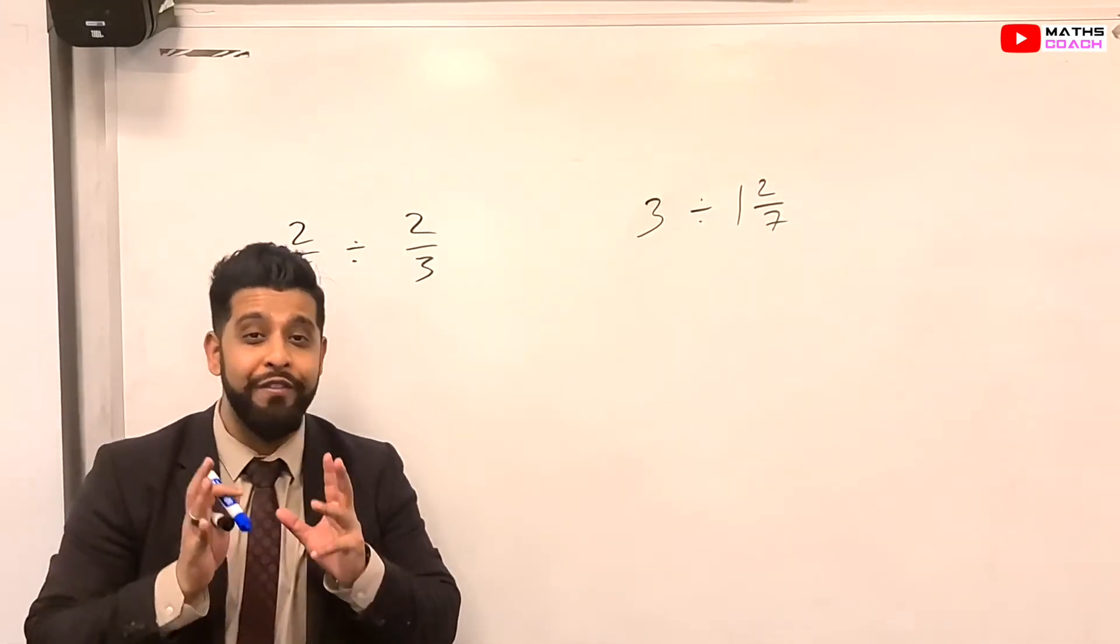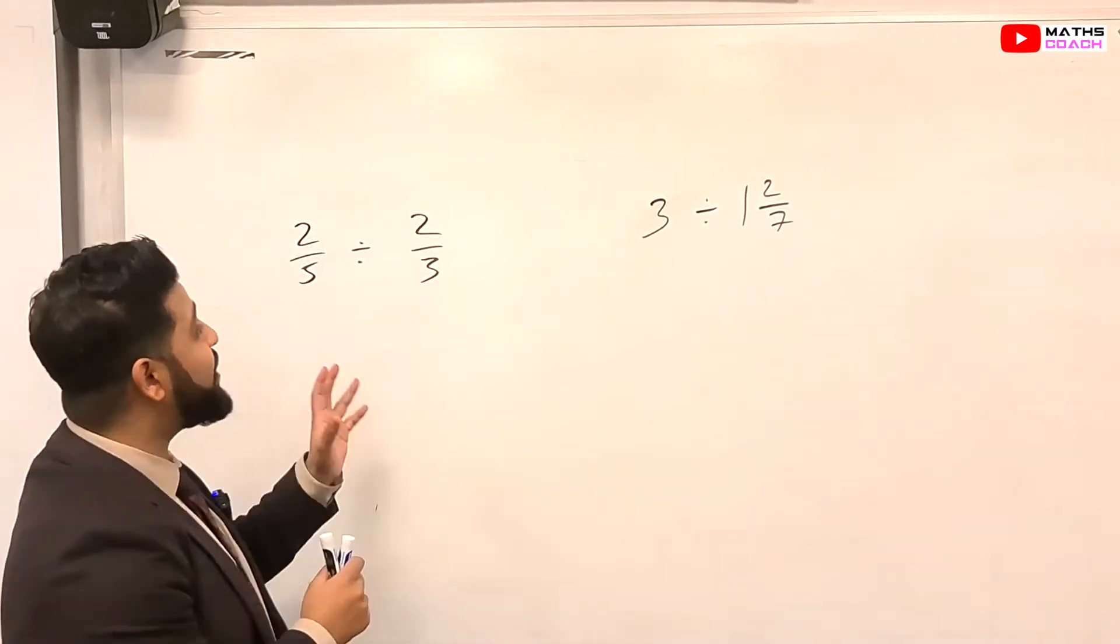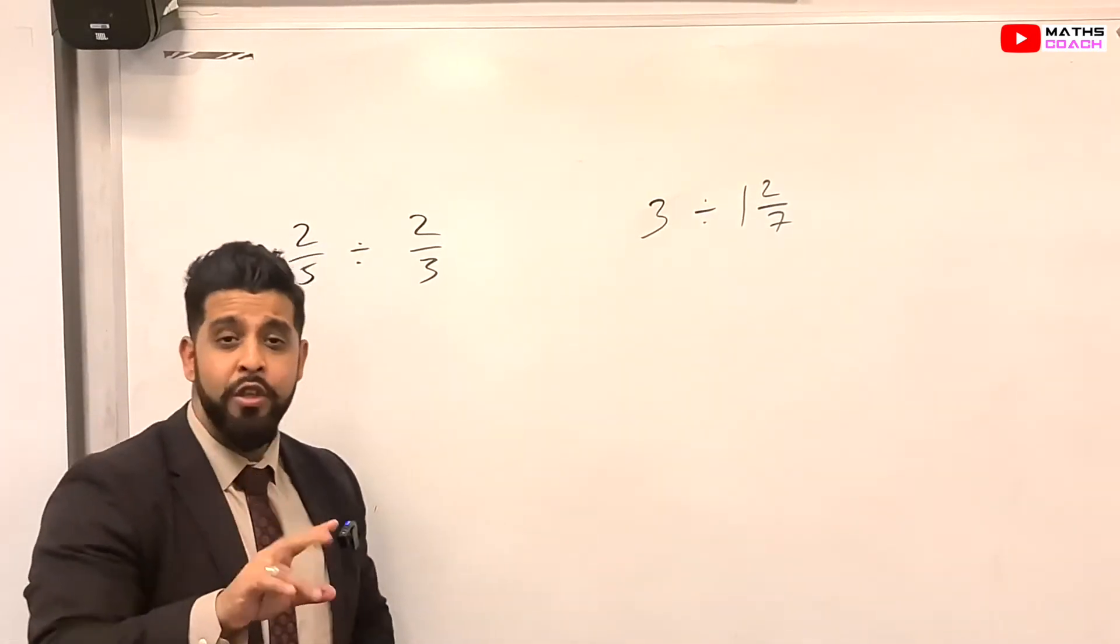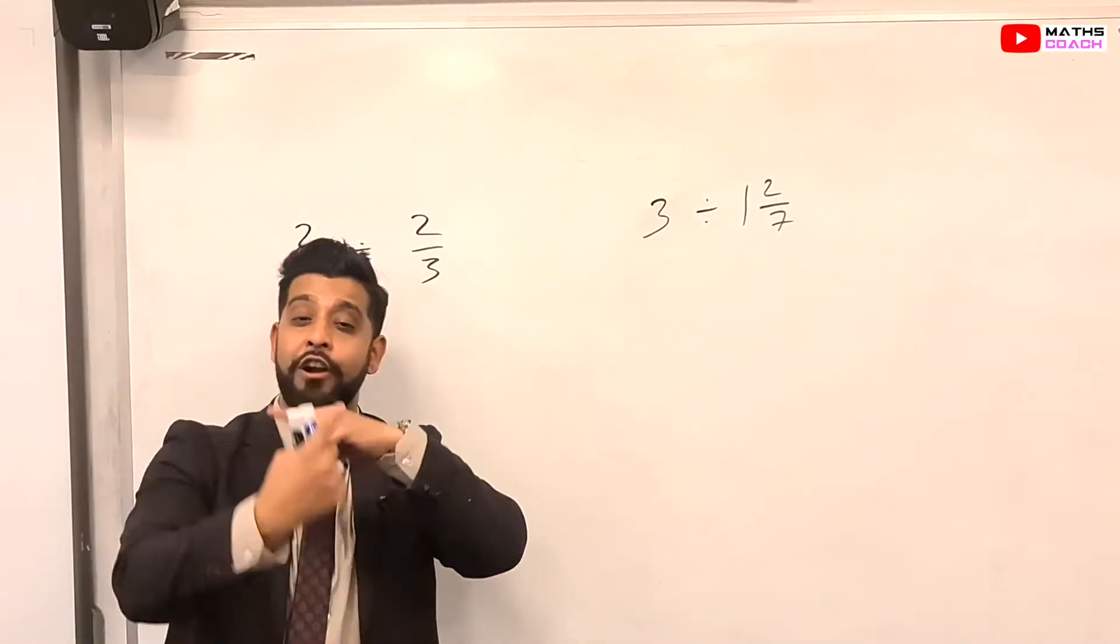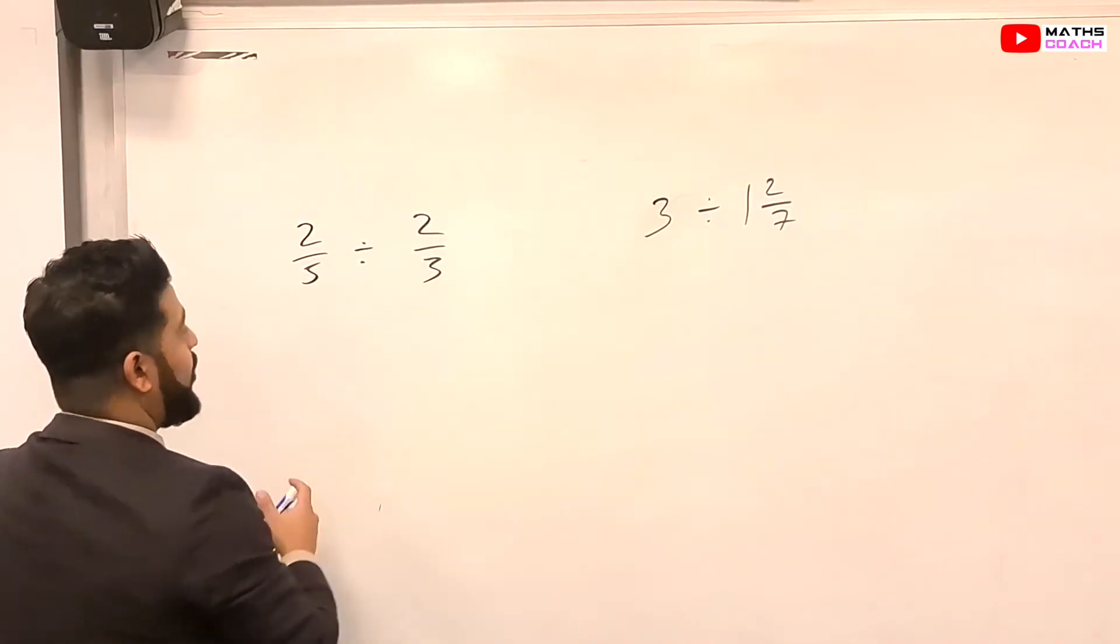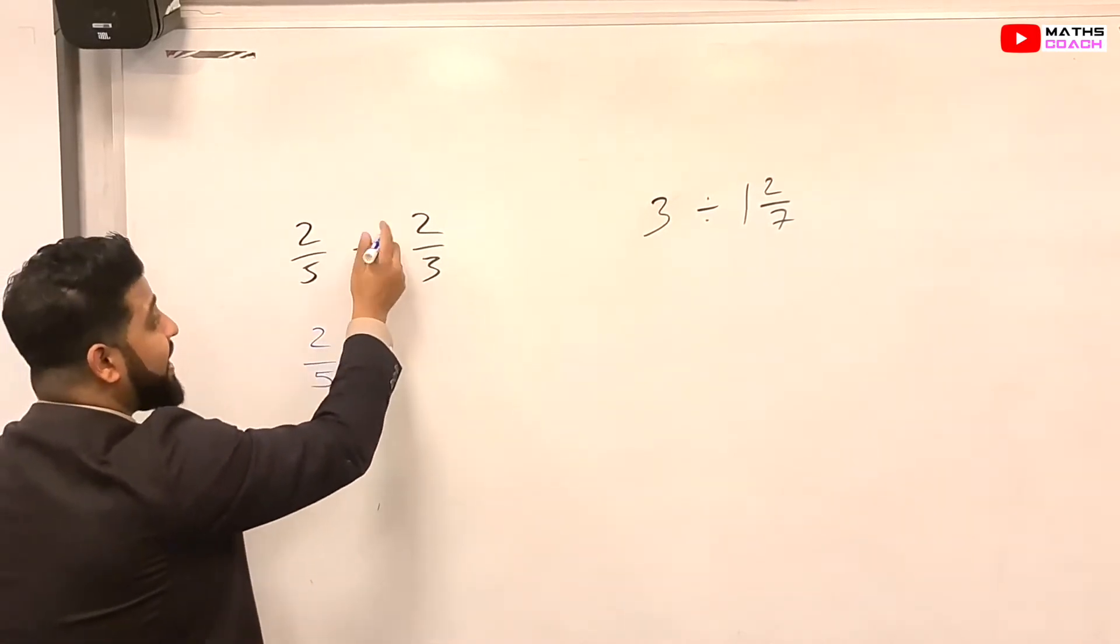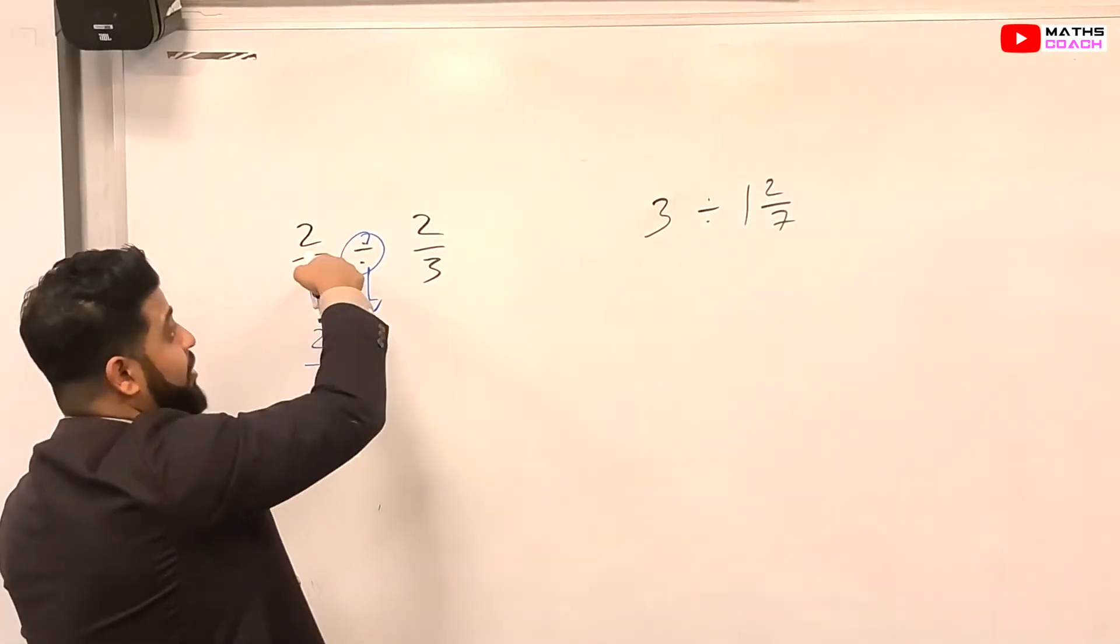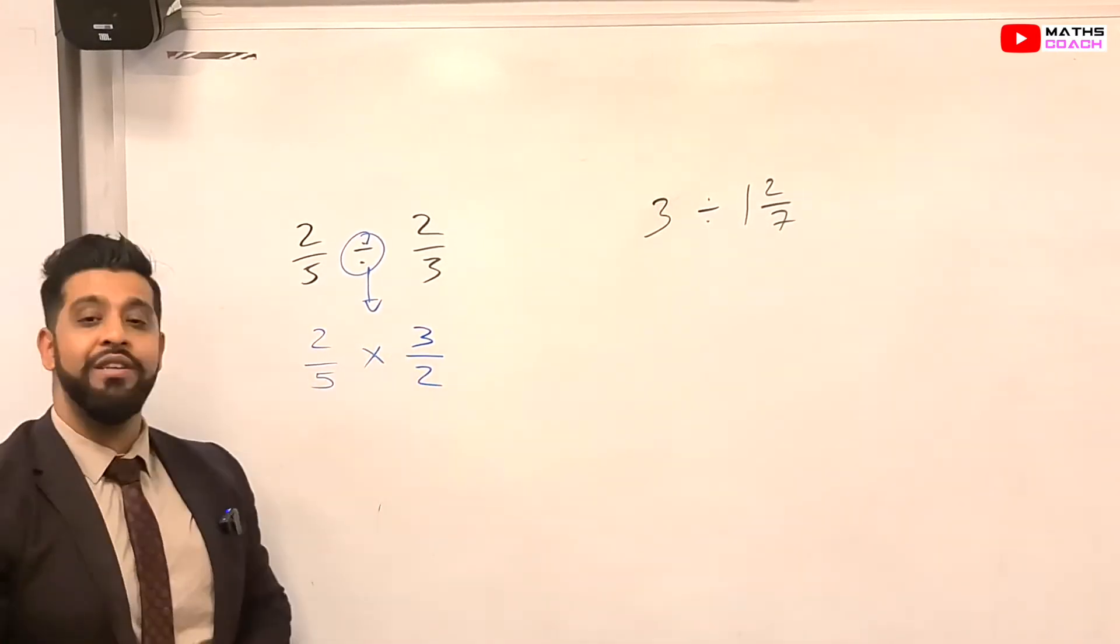Right, now let's move over to division now. Now with division, division and multiplication work hand in hand. Why? Because division actually ends up becoming multiplication. Now, I want you to remember this. When it comes to division, you change the sign to a multiplication, and you flip the second fraction. So what do I mean by this? Have a look at the first question here. We've got 2/5 divided by 2/3. So we'll keep the first fraction as 2/5. We will change this sign into a multiplication sign, and we will flip the second fraction. This is the first fraction. This is the second fraction. We'll flip it. So instead of 2/3, we'll have 3/2.